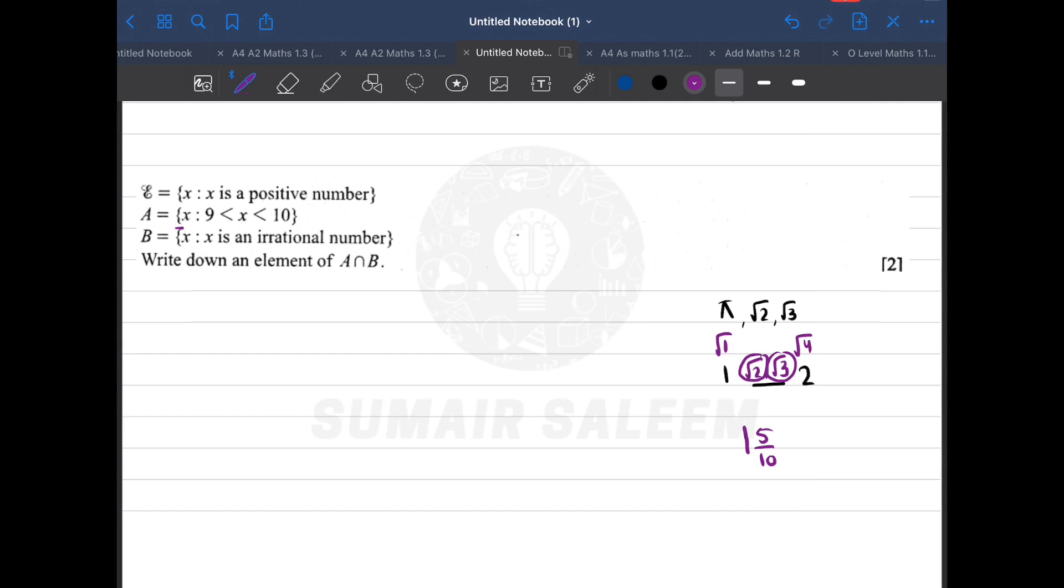This concept is connected to this question. Now let's see: A is a positive integer between 9 and 10, and B is an irrational number. You need to find A intersection B, which means it should be an irrational number between 9 and 10. So let's find an irrational number between 9 and 10. √81 is 9 and √100 is 10, so in the middle it can be any number between √82 till √99. You can write √83, or √85, or √87—it's your call.